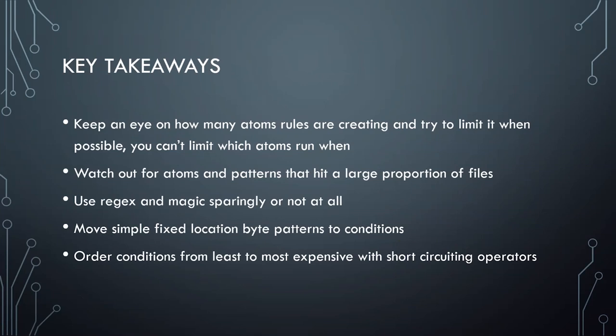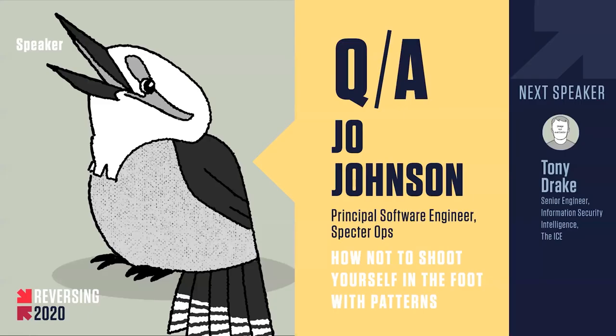Keep an eye on how many atoms rules are creating and try to limit it as much as you can. Watch for atoms and patterns that hit a large portion of files — that means a lot more work. Use regex and the magic library sparingly, especially because magic doesn't work on Win32 and is slower than almost anything else. When writing conditions, order from least to most expensive and use operators that short-circuit to minimize the amount of work done.